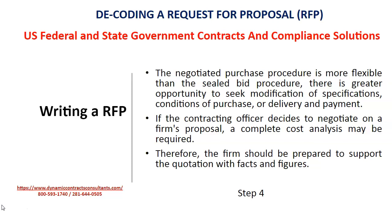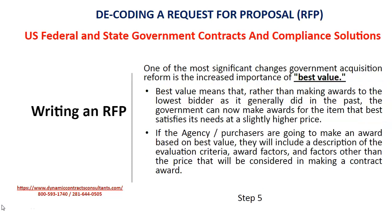If the contracting officer decides to negotiate on a firm's proposal, a complete cost analysis may be required. Therefore, the firm should be prepared to support the quotation with facts and figures. One of the most significant changes in government acquisition reform is the increased importance of best value. Best value means that, rather than making awards to the lowest bidder as generally done in the past, the government can now make awards for the item that best satisfies its needs at a slightly higher price. If the agency is going to make an award based on best value, they will include a description of the evaluation criteria, award factors, and factors other than price that will be considered in making a contract award.